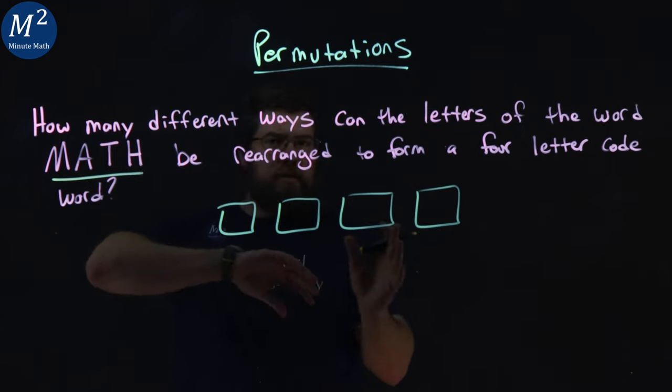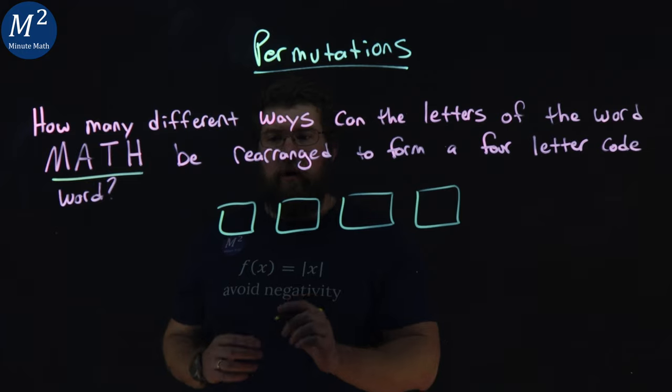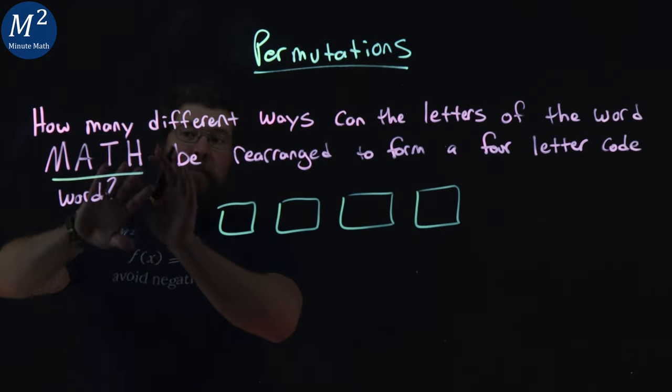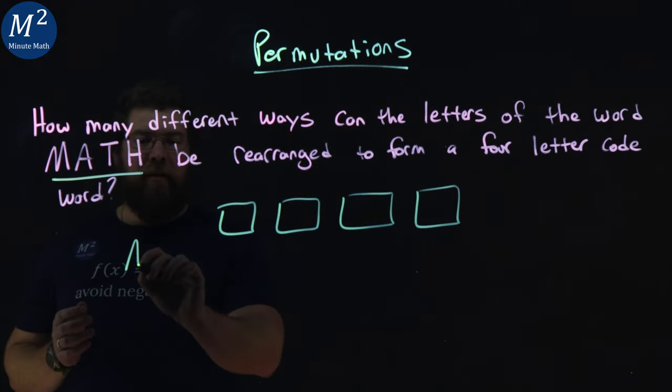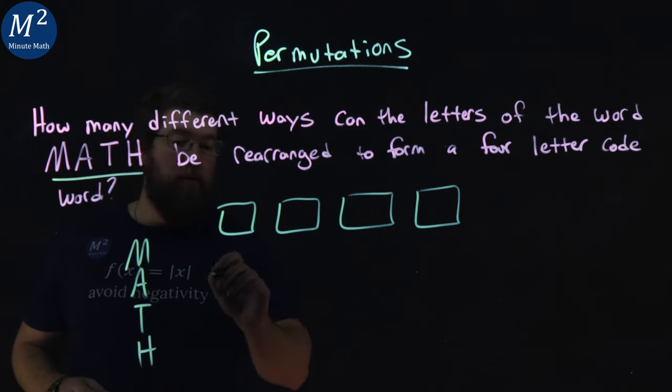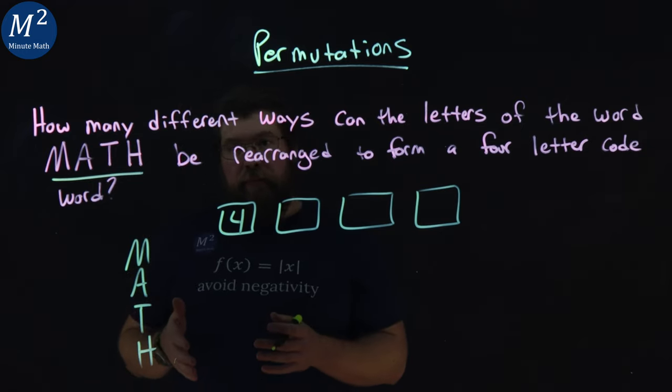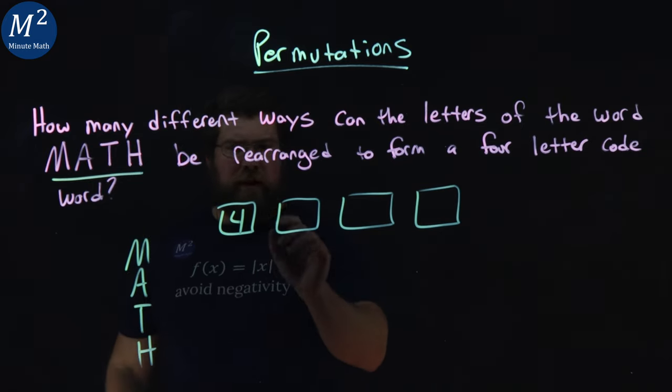MATH can be rearranged. There are four different letters in each one of these boxes. If our first box, we can pick any letter from MATH here—M, A, T, H. We have four options for the first letter.